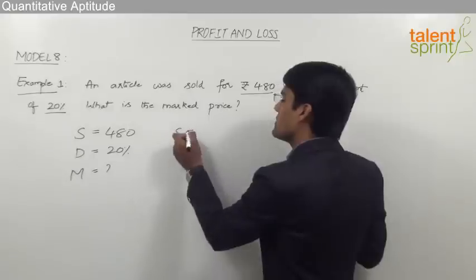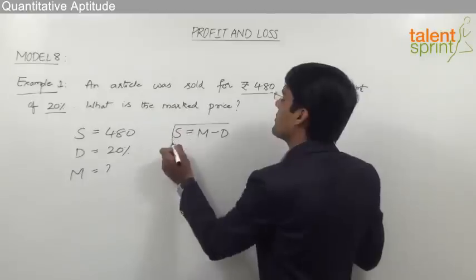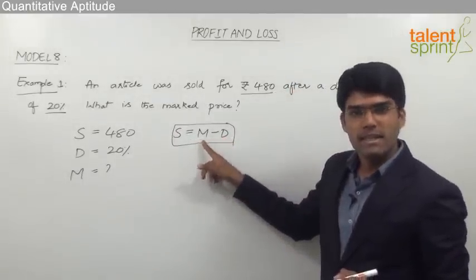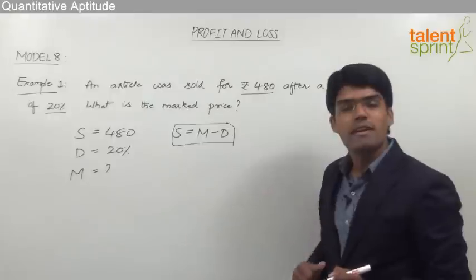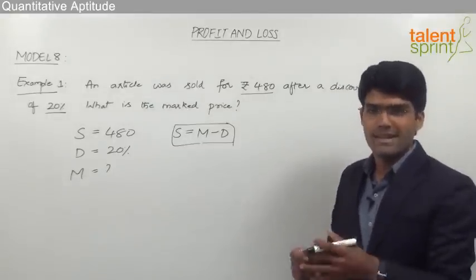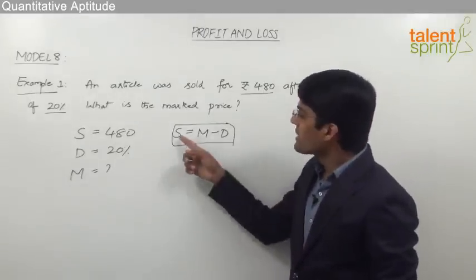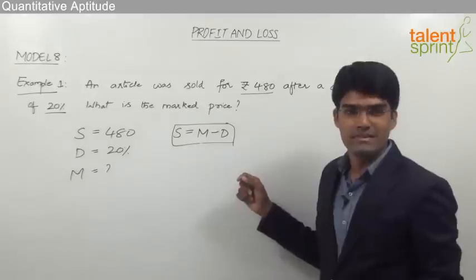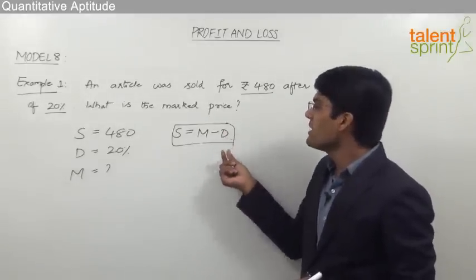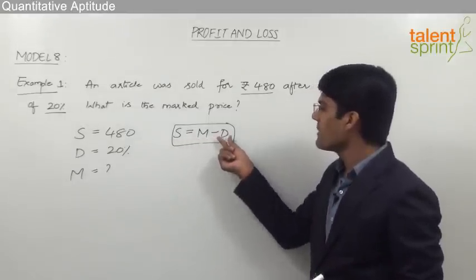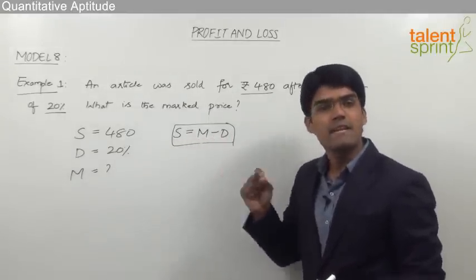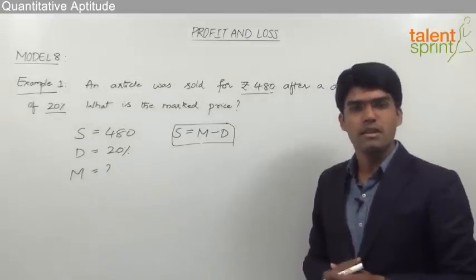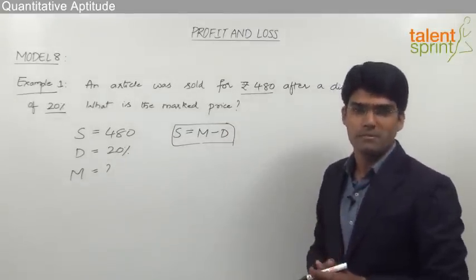Selling price should always be taken as marked price minus discount. Since discount is always calculated on marked price, we treat marked price as 100%. For example, if the discount is 10%, selling price would be 100% minus 10% = 90%. If the discount is 25%, selling price would be 100% minus 25% = 75% of the marked price. All percentages must be taken with respect to marked price.